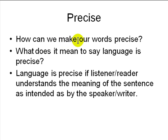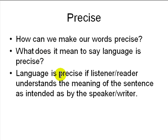The first thing we need to make sure is that the words we use are precise — you cannot use vague words. Language is precise when what you're saying is what the listener understands as intended by the speaker or author. You should try to convey your meaning as clearly as possible. What is imprecise language?